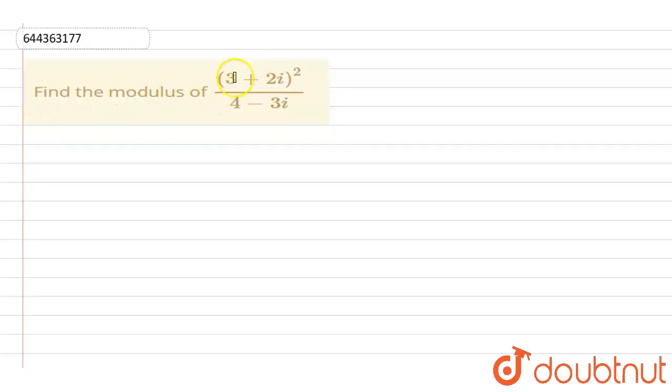Find the modulus of (3 + 2i)² divided by (4 - 3i).